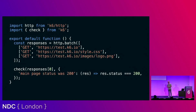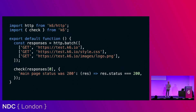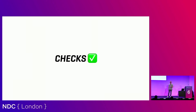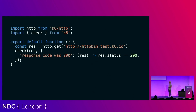You can also batch multiple requests together so multiple TCP connections do stuff at the same time. The batch can take an array of strings with GET as request method and the URL, or objects in different notations. When you run it you get an array of responses with metrics for each one. Checking response zero — we do a check on it, checking whether the response status code is 200. This introduces the concept of checks.